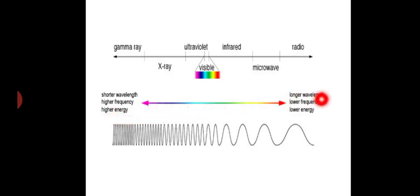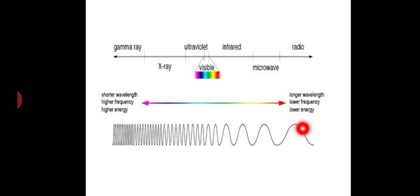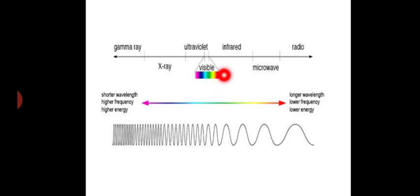A longer wavelength corresponds to a lower frequency and lower energy, while a higher frequency corresponds to higher energy. The visible light portion of the spectrum is subdivided into VIBGYOR — violet, indigo, blue, green, yellow, orange, red.